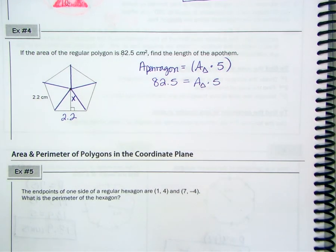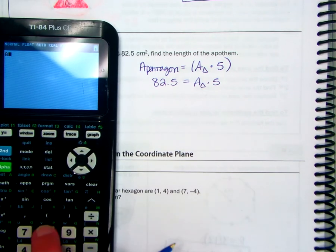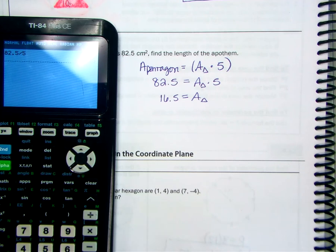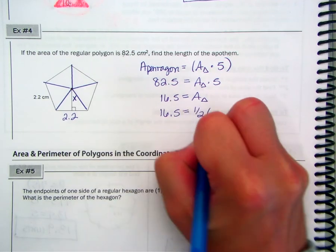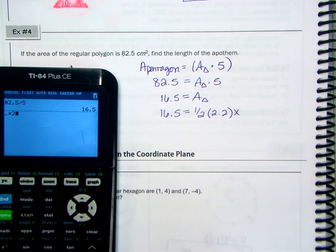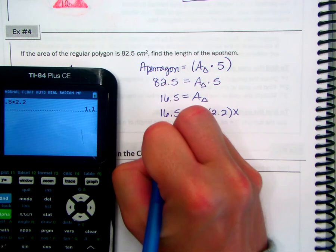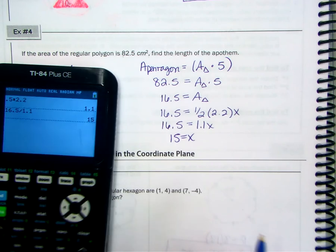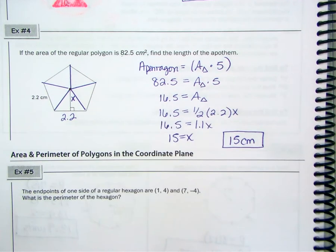So if the area of the pentagon, we substitute, it says it's 82 and a half. Again, area of the triangle times 5. So divide 82 and a half by 5. We get 16 and a half as the area of the triangle. So now using what we know, the area of the triangle is one-half base times height. So 16 and a half equals one-half base of 2.2 times height X. So a half of 2.2 is 1.1. So 16.5 equals 1.1 X. Divide 16 and a half by 1.1. And we get 15. So the length of the apothem is 15 centimeters. We want to include a unit when possible.